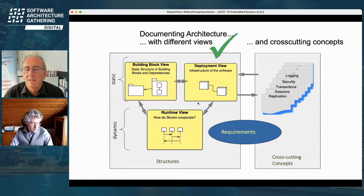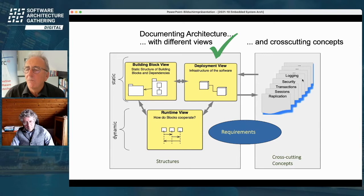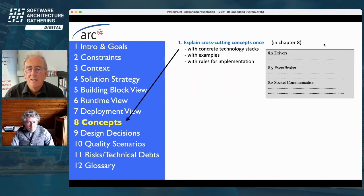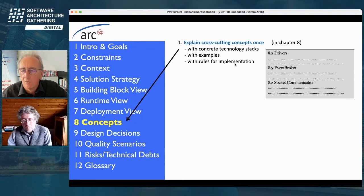In embedded systems, the deployment view is very often the starting point that drives your component structure and top-level building block structure. You can verify cooperation between building blocks using runtime scenarios. There is one more important thing that becomes more important every day, and we've put it into Arc42 chapter 8: cross-cutting concepts. These cross-cutting concepts simplify the discussion of your component and deployment structure by defining concepts once and forever in chapter 8, explained with concrete technology steps, examples, even code examples, and implementation rules.